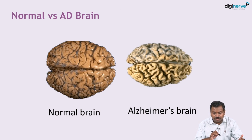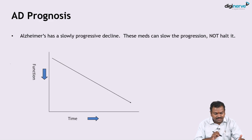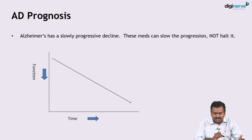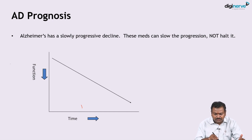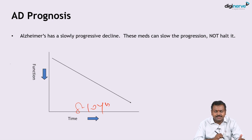Comparing a normal brain versus an Alzheimer's brain, the atrophy occurs predominantly in the frontal, parietal, and temporal lobes. Alzheimer's disease is a slowly progressive decline; medications may slow the progression but halting it is not possible. There is significant decline over 8 to 10 years.